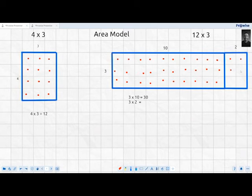And then 3 times 2: 2, 4, and 6, just doing some quick skip counting. So our second rectangle equals 6.